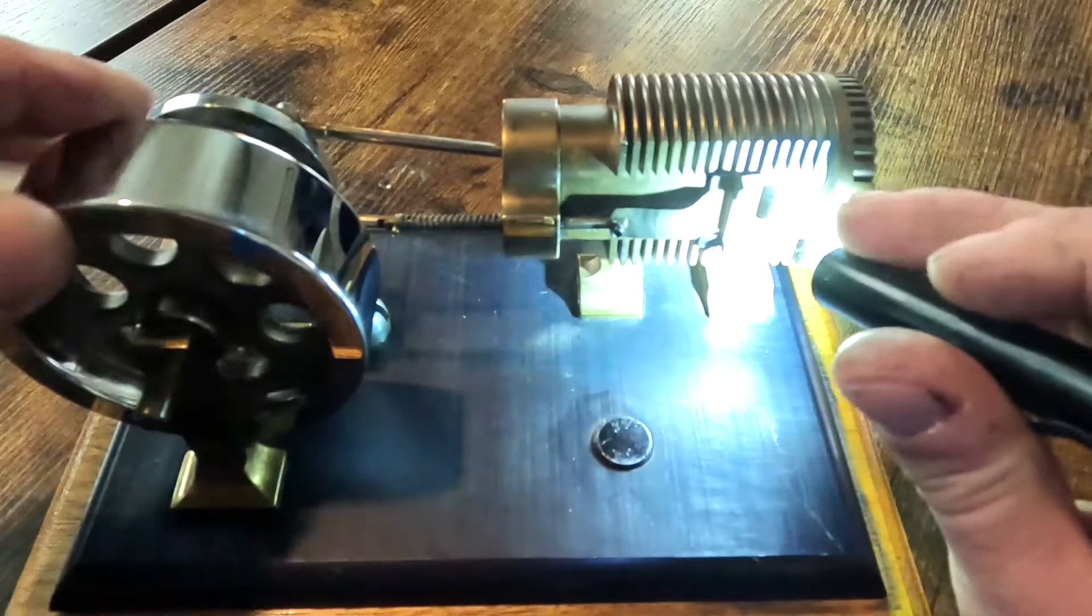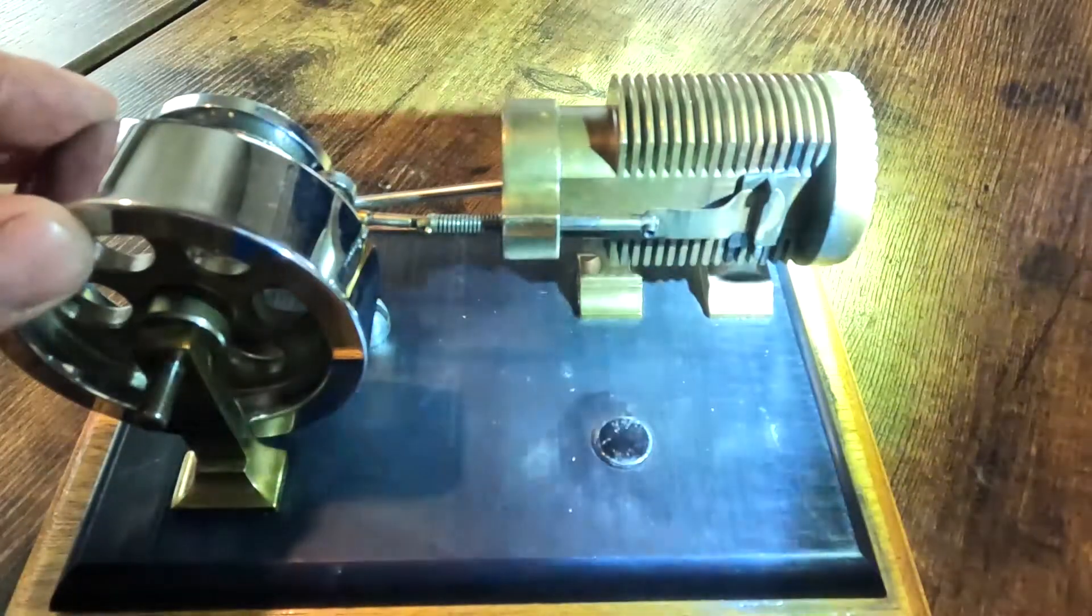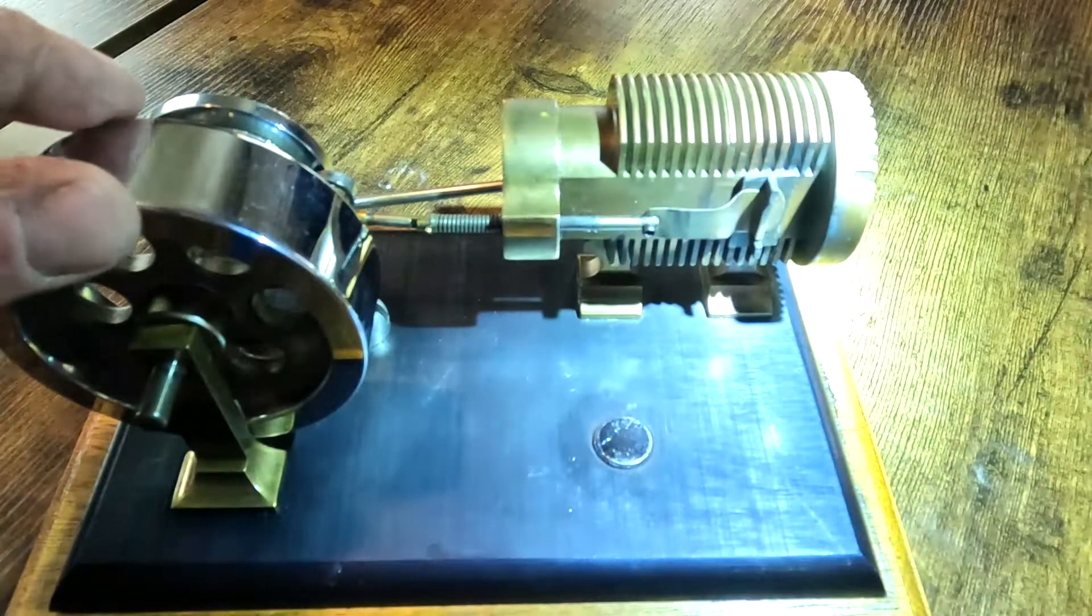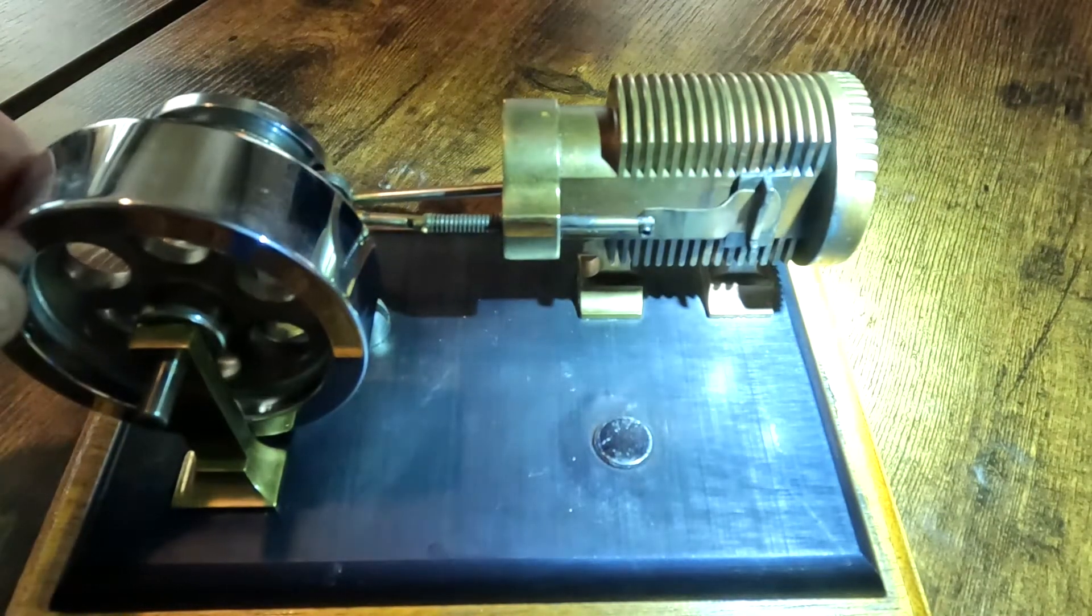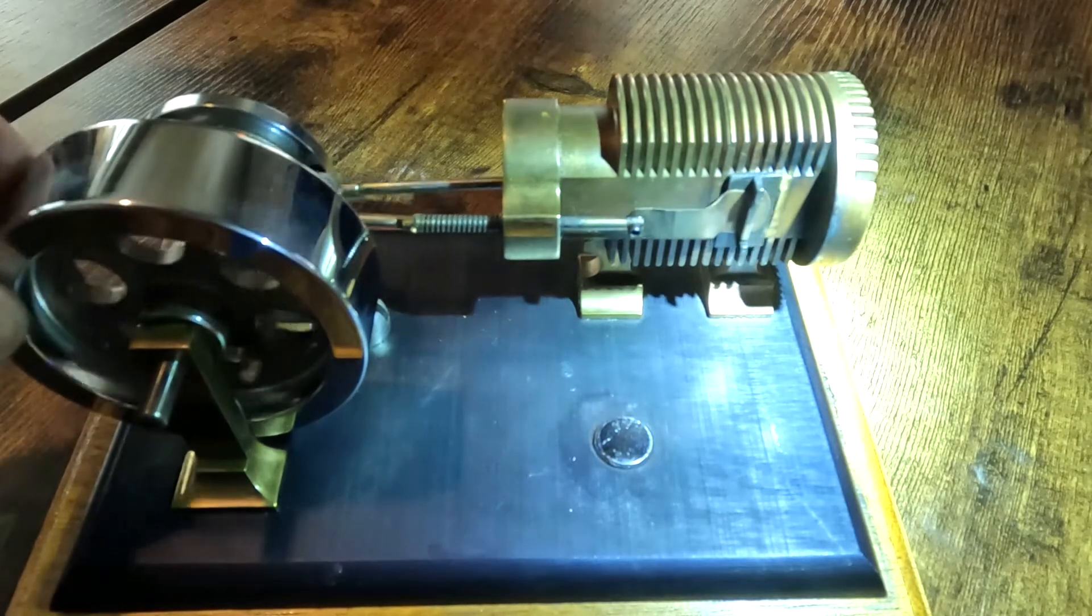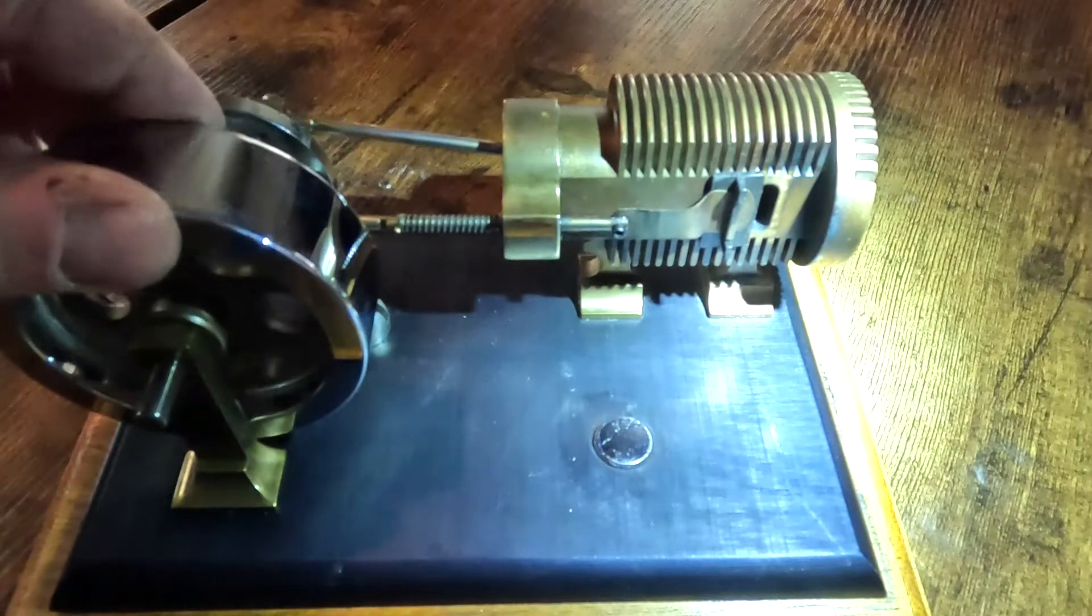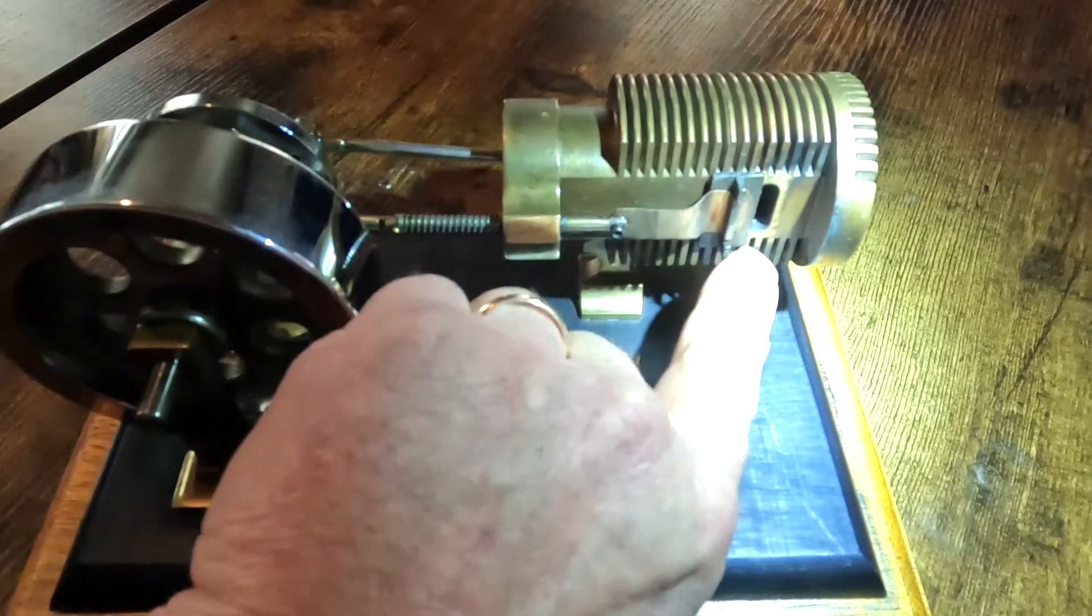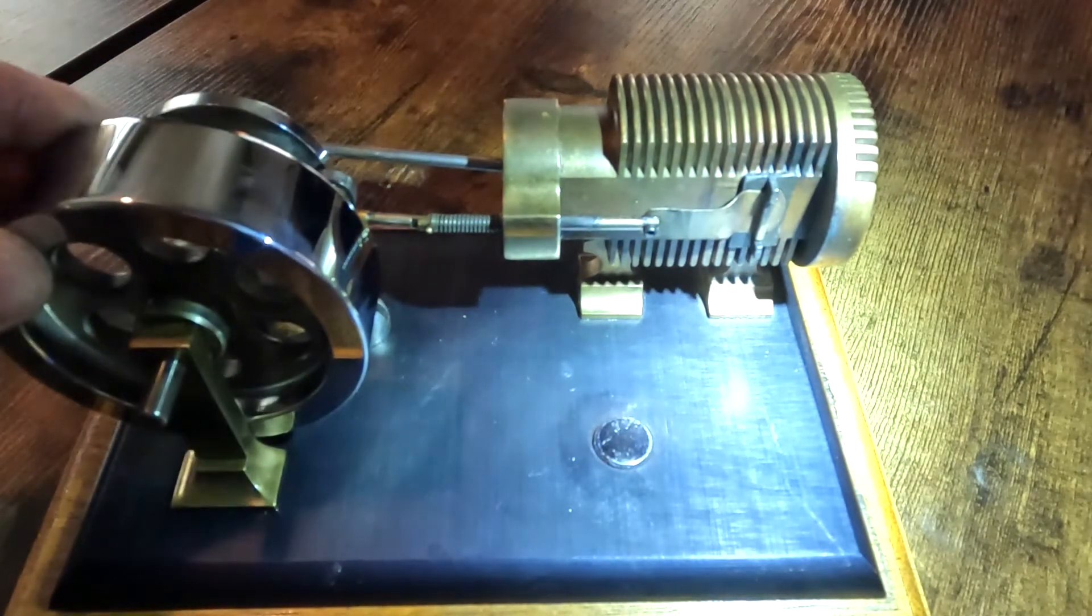So as the piston comes up on top dead center, I'm trying to get this light where you can see the action of it. Right as we come up on top dead center, see how quickly that valve opens. So we're on our way back down, we're pulling a vacuum which is drawing the flame through this opening. Before we get to bottom dead center it's completely closed.